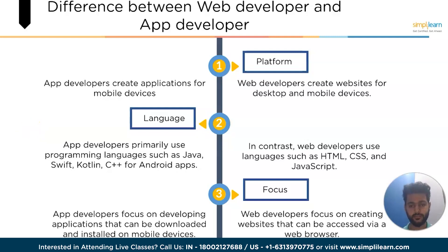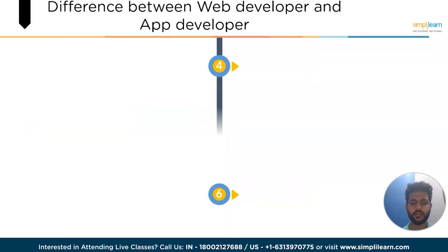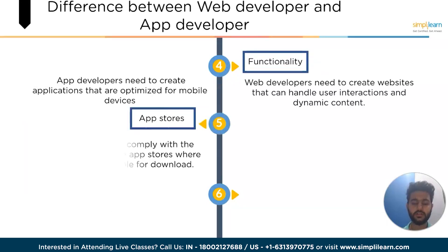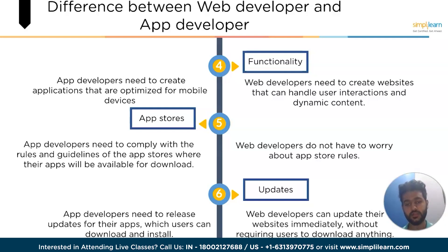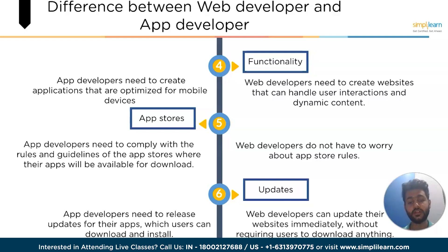Fourth is functionality. App developers need to create applications optimized for mobile devices with features such as touch control, location-based services and camera access, whereas web developers need to create websites that can handle user interactions and dynamic content. Next is app stores — app developers need to comply with the rules and guidelines of app stores where their apps will be available for download, while web developers do not have to worry about app store rules. Regarding updates, app developers need to release updates which users can download and install, while web developers can update their websites immediately without requiring users to download anything.